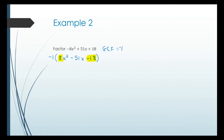To apply the AC method, we compute 8 times negative 18, which gives negative 144. We wouldn't want to guess and check here because there are lots of combinations for 8 and for 18. So we look for two numbers that multiply to negative 144 and add to negative 51. Since the middle is negative, the biggest number in each pair will be negative.